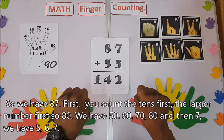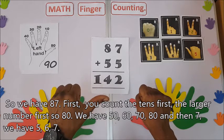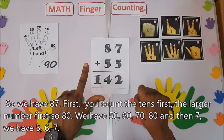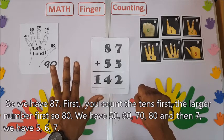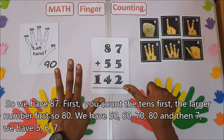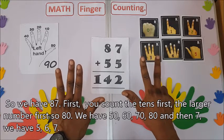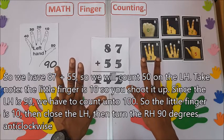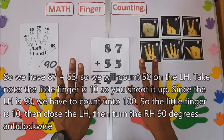We have 50, 60, 70, 80, and then seven. We have five, six, seven. So we have 87 plus 55, so you count 50 here.